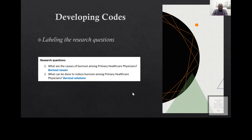You have to come up with a phrase — it doesn't have to be perfect, but if the phrase can be between two to five words that reminds you of the research question that you have, that would be great. So 'burnout causes' reminds us of the first research question, and 'burnout solutions' reminds us of the second research question.